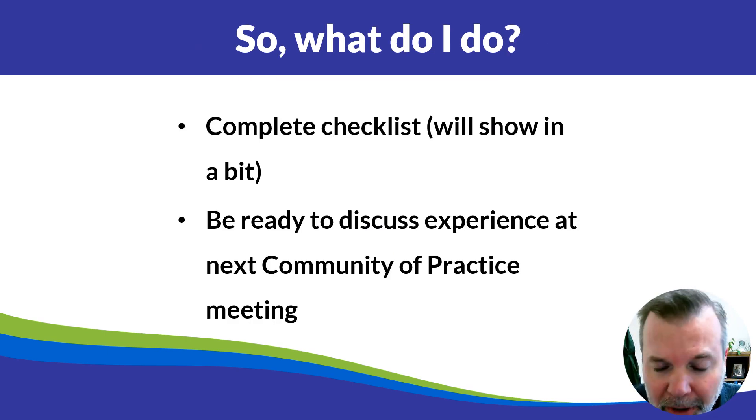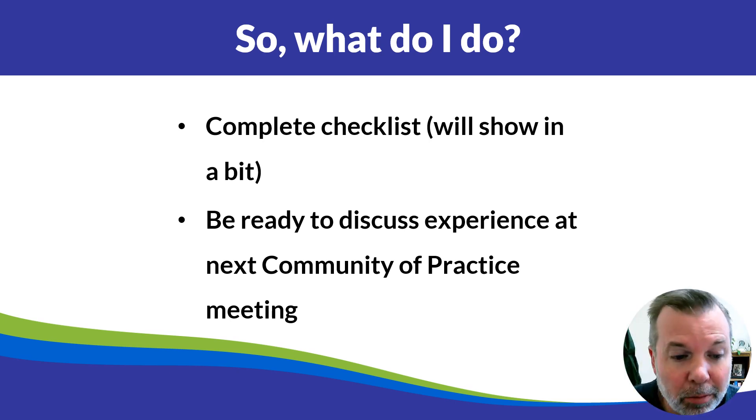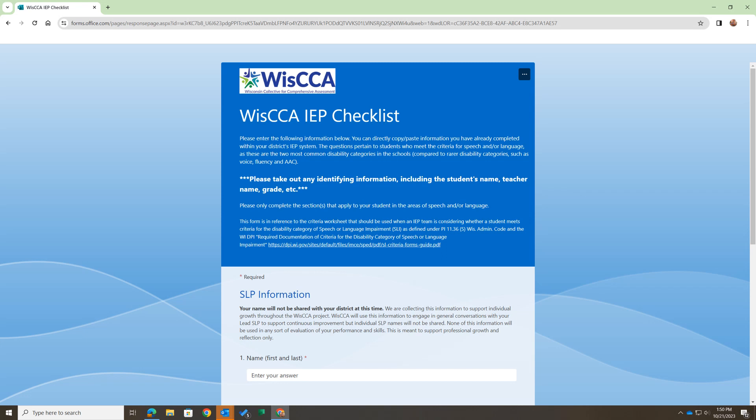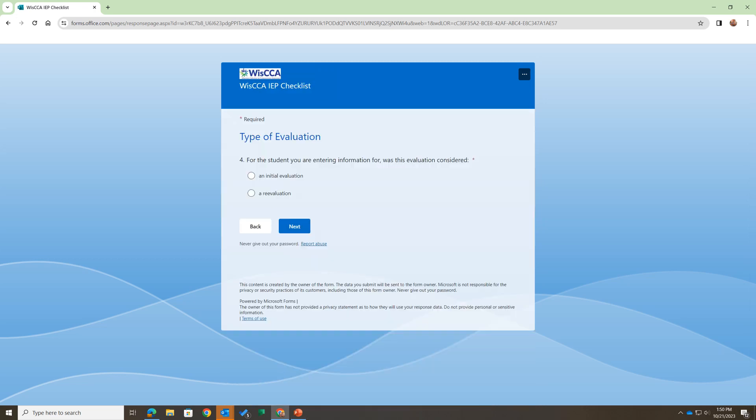So what you're going to do is complete a checklist — I'm going to show you that in a bit — and you're going to be ready to discuss it at our next community of practice. This is what the checklist will look like when you click on the link. One thing to note is that we're asking you to remove any identifying information from your students. This project and all activities have been approved by your school district and every district participating in this project, as well as UWM's Institutional Review Board. On this first page, we just want to get your information and you can tell us the type of evaluation you completed.